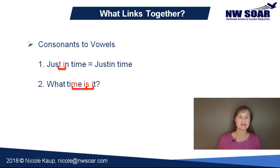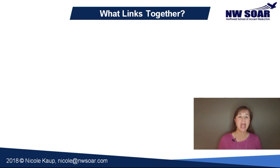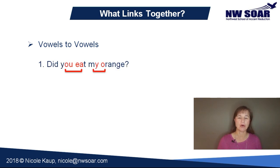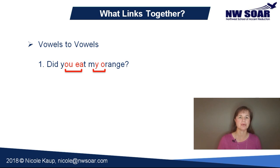Finally, there is a third category: an ending vowel connects to a beginning vowel, as in 'did you eat my orange?' There are two examples of this type of linking in that sentence: 'you eat' and 'my orange.' Make sure to fully pronounce both the ending and beginning vowels in these blends. This type of linking occurs much less frequently than the previous two categories, since vowel-to-vowel sound combinations don't happen as often in English.